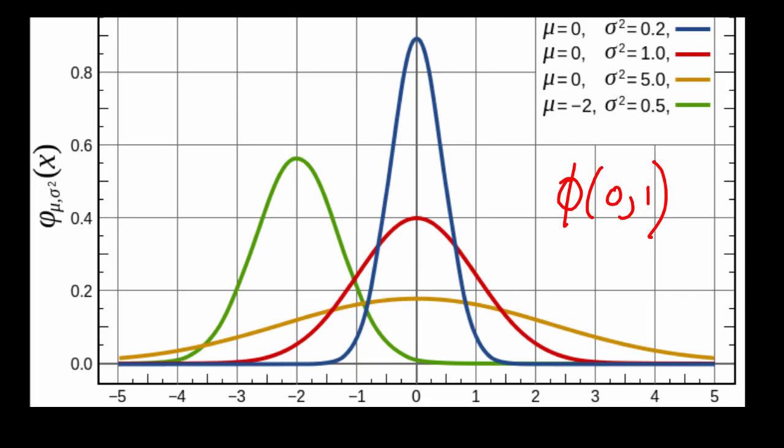If we have a variance of 5, we've got a much lower and flatter object, and if we have a variance of 0.2, we've got a much higher, more centralized object.